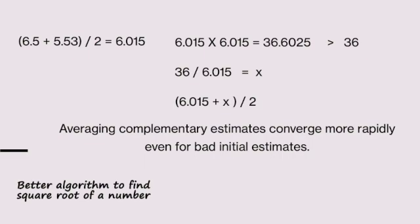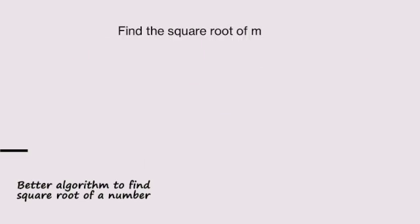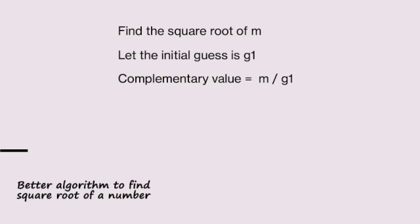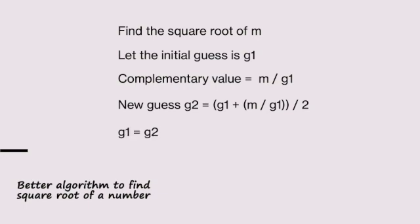We have to find the square root of m. Let the initial guess be g1. The complementary value is m divided by g1. Now the new guess g2 equals g1 plus m divided by g1, divided by 2. We assign g2 to g1 and repeat the calculation to find g2.